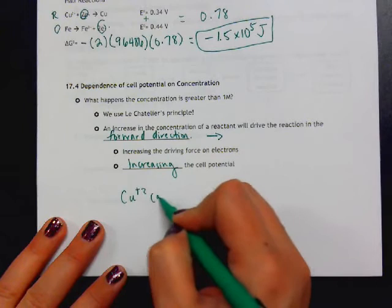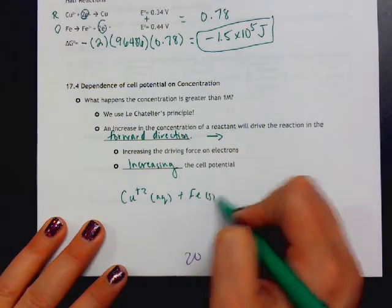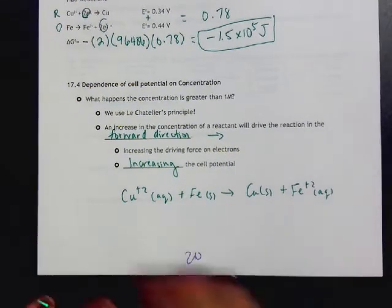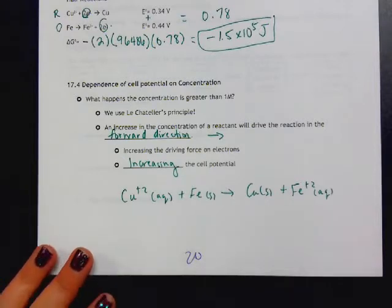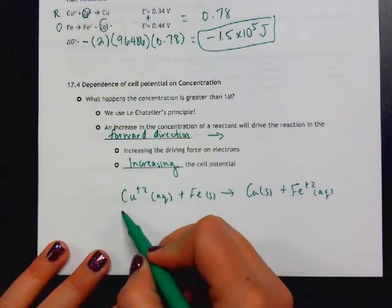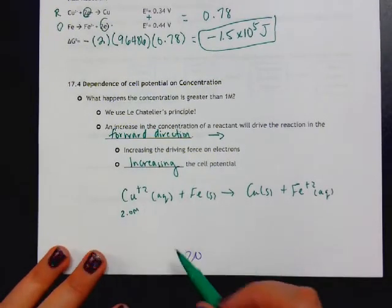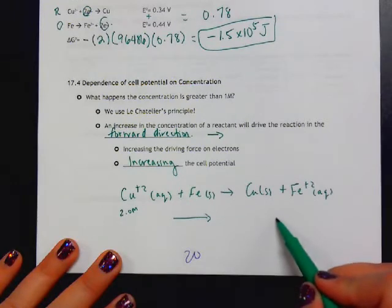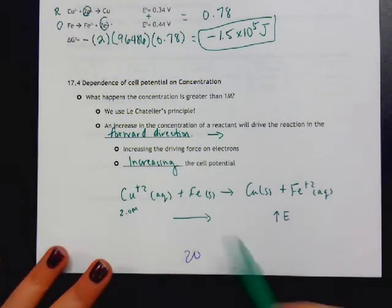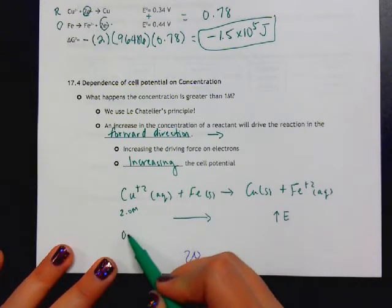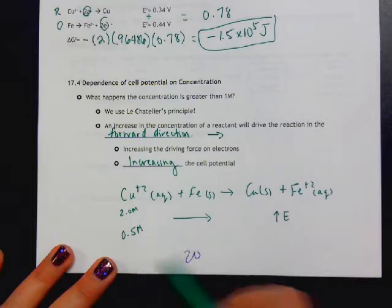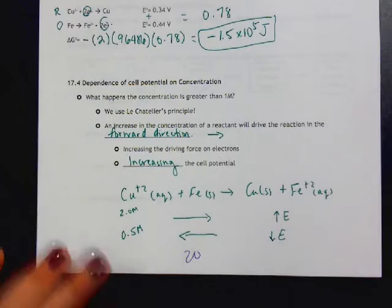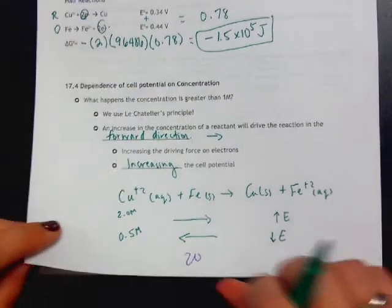If the change in concentration makes the reaction shift to the right towards the products, then the cell potential would increase and you'd have a greater electromotive force. However, if the change in concentration forced the reaction to shift to the left, that would mean we would have a decreasing cell potential. So if we take our problem above, we had copper plus 2 aqueous and iron solid going to copper solid and iron plus 2 aqueous. The standard condition says that all of our solutions are at one molar. But if the copper were at 2 molar, that would be an increase. We're increasing the concentration of the copper ions, which would shift the reaction to the right and thereby increase the value of E. However, if we made the concentration of copper 0.5 molar, that's a decrease from 1, and that would shift the reaction to the left, decreasing the cell potential.